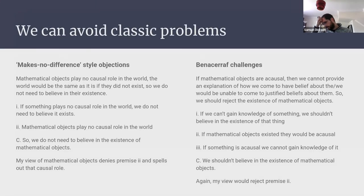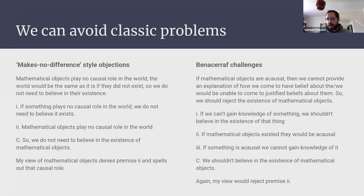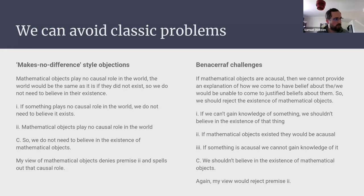We can also avoid classic problems with mathematical platonism by saying mathematical objects are exotic. The 'makes no difference' style objections and the Benacerraf challenges crucially depend on the acausality of mathematics — which I'm simply denying. In denying that, I dodge these important challenges. Platonism has indispensability arguments in its favor, but that doesn't answer questions about the inherent mysteriousness of mathematical objects or tell us what mathematical objects are — and that's what my theory hopefully does.